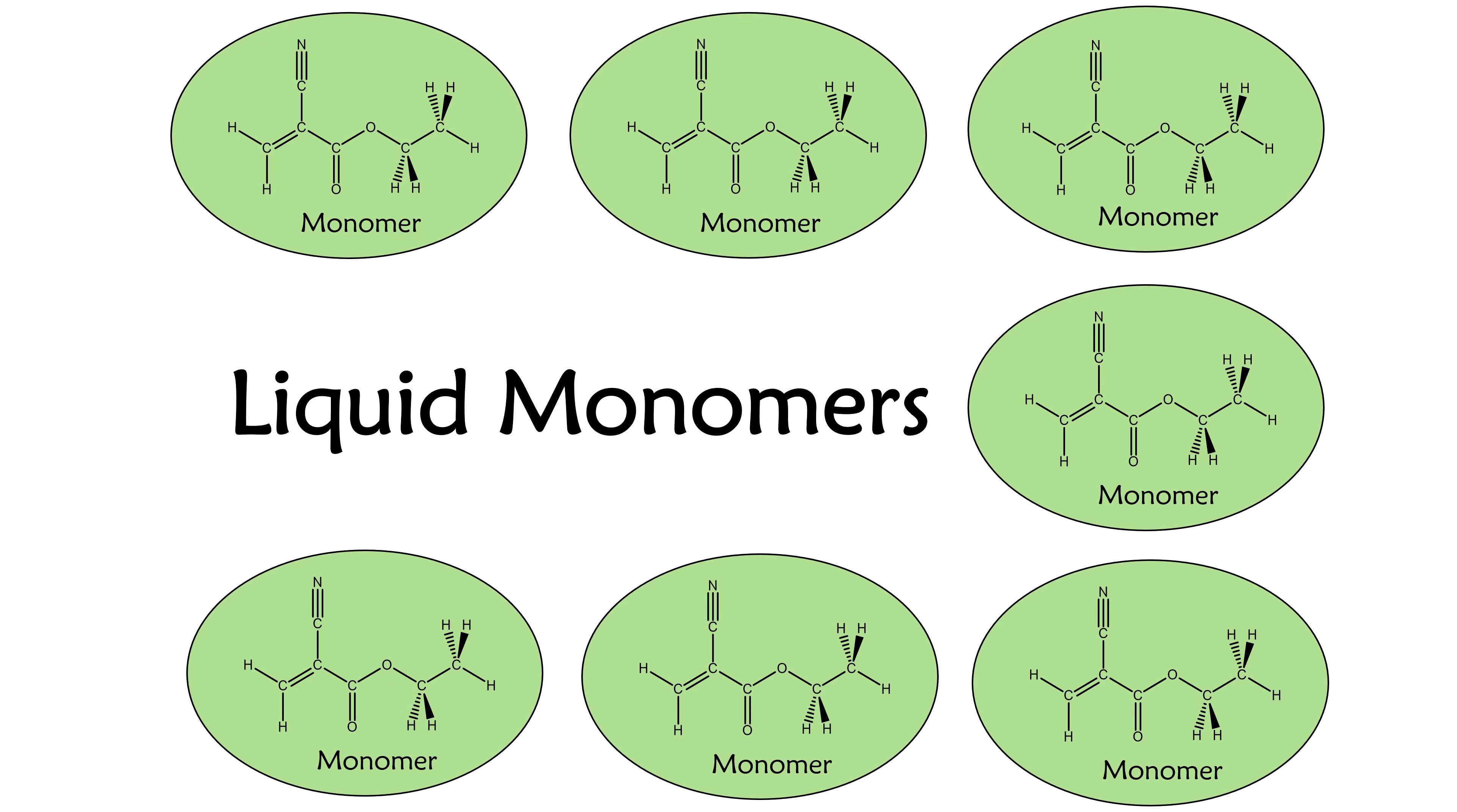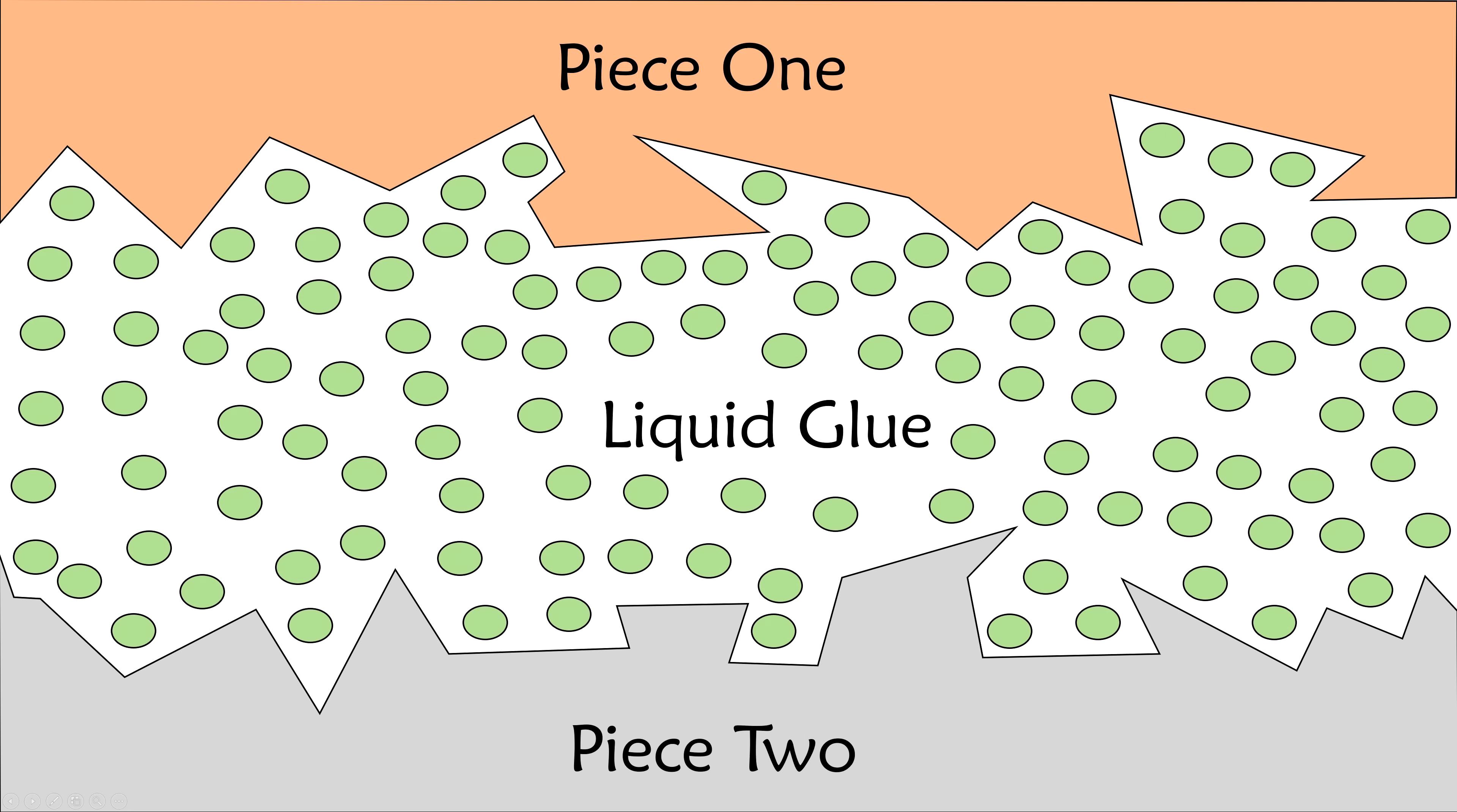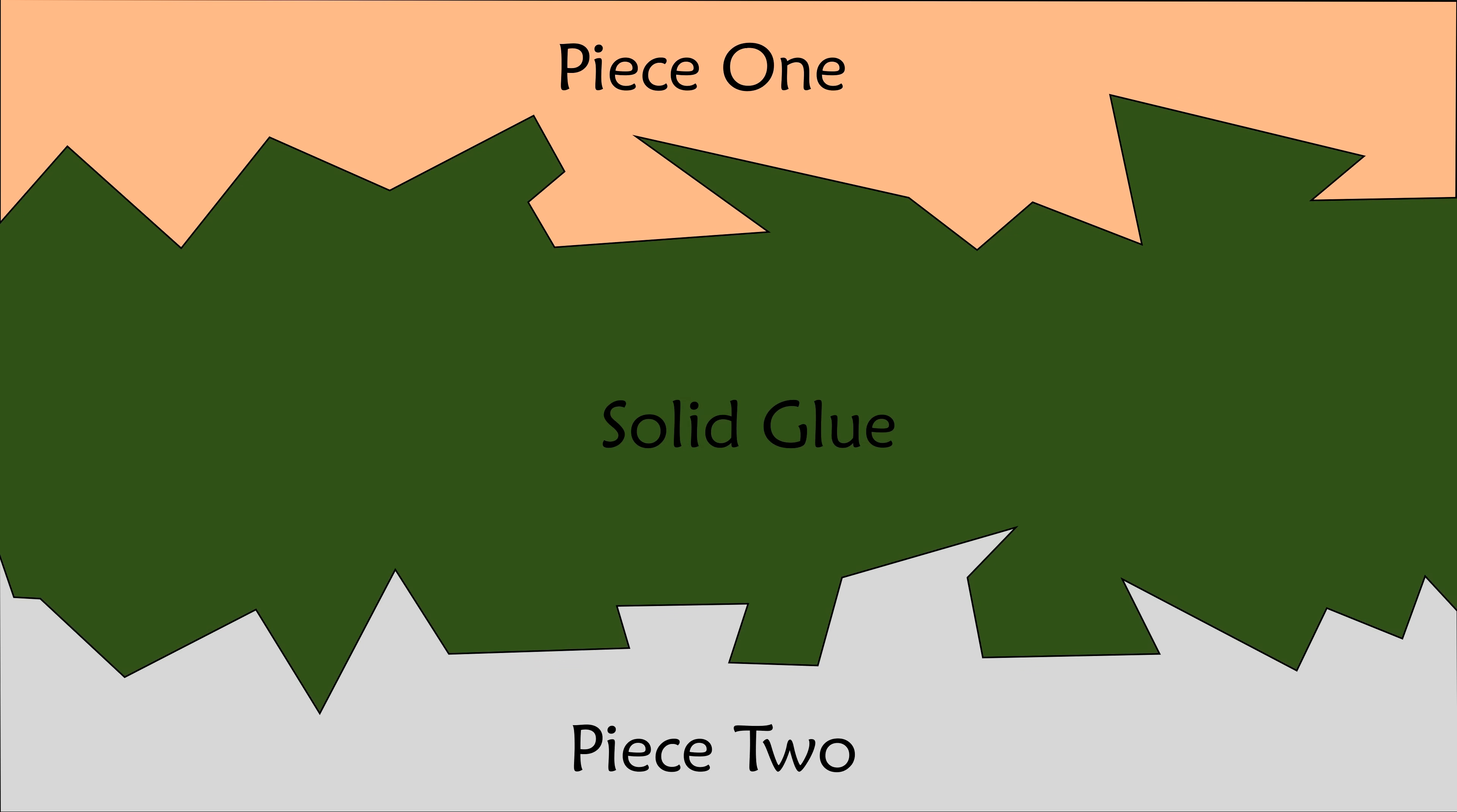The chemistry of superglue at work is the story of liquid monomers reacting to form chains of polymer. As a liquid, superglue seeps into all the cracks of the surfaces being glued. As it polymerizes, the intertwined chains of polymer become solid, sticking the bits together.